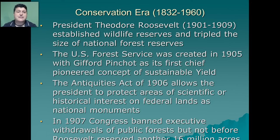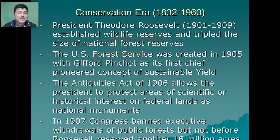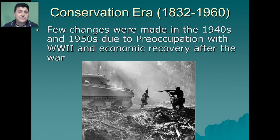There were many other major events during the Conservation Era. President Theodore Roosevelt established wildlife reserves and tripled the size of national forests. He established the U.S. Forest Service in 1905 with Gifford Pinchot as the first chief. Pinchot pioneered the concept of sustainable yield, determining mathematically the maximum number of things that can be harvested so that it can be renewed. The Antiquities Act of 1906 allowed the president to protect areas of scientific or historical interest on federal lands as national monuments. In 1907, Congress banned executive withdrawals of public forests because they thought Roosevelt was preserving too much, but not before Roosevelt reserved another 16 million acres. The Conservation Era waned in the 1940s and 1950s due to preoccupation with World War II and the economic recovery necessary after the war.